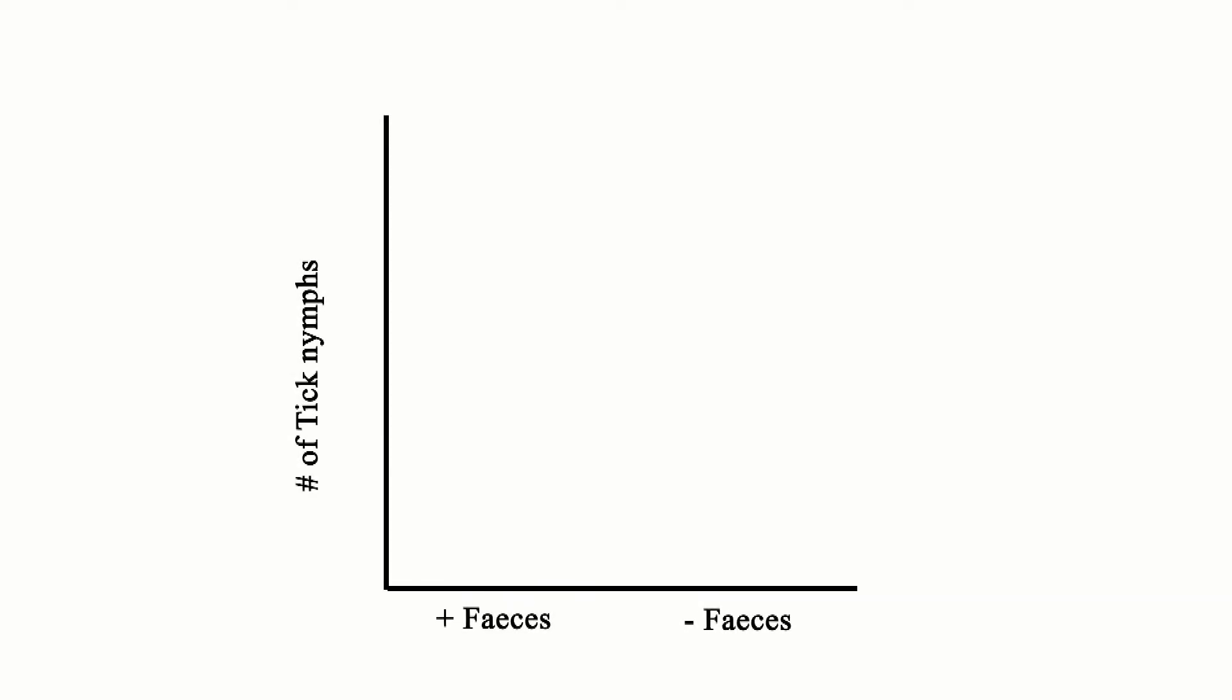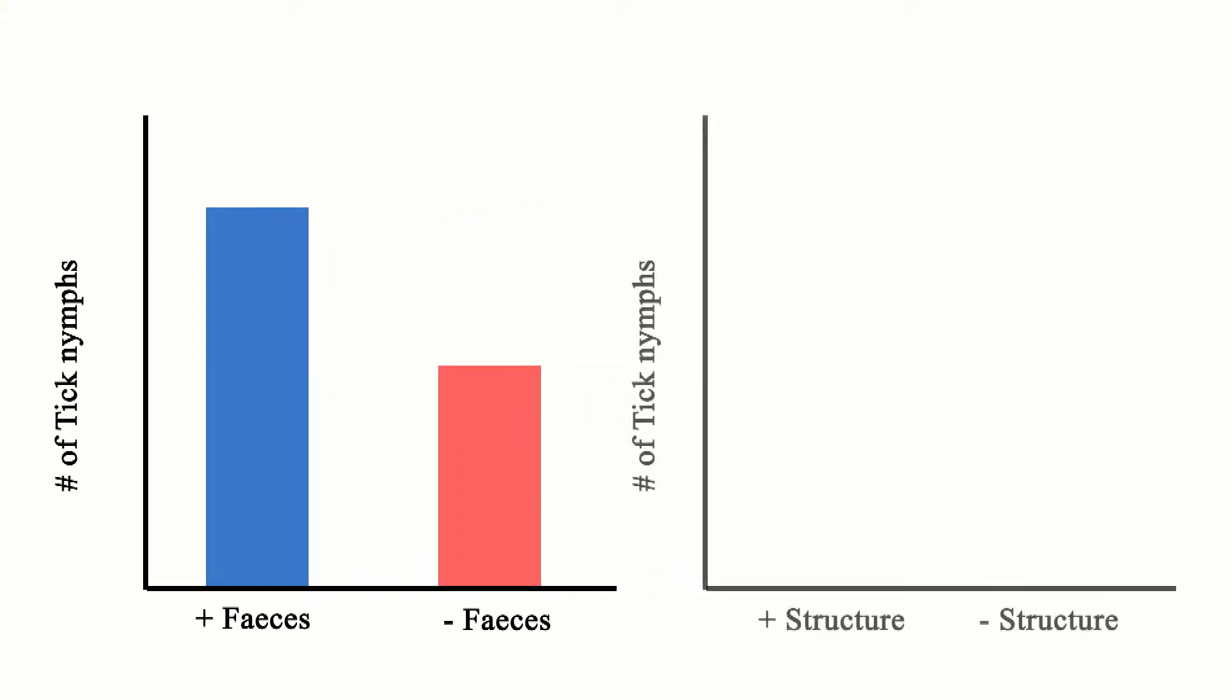Based on our theoretical framework, we assume a positive relation between the number of nymphs and feces, as well as a positive relation between the number of nymphs and vertical structure. This implies that we expect more nymphs in the feces and vertically structured compartments compared to the control compartment.